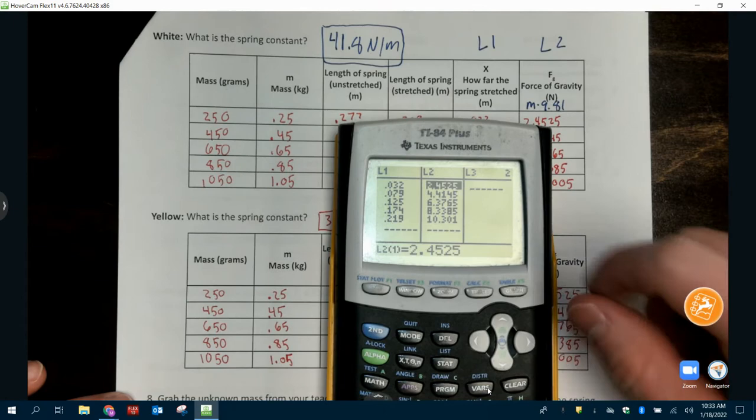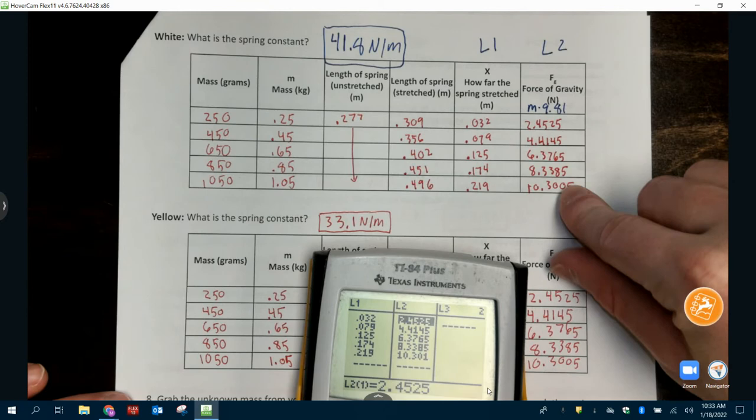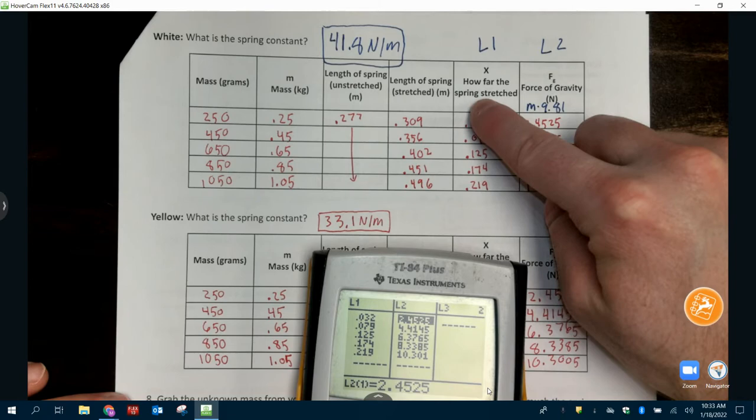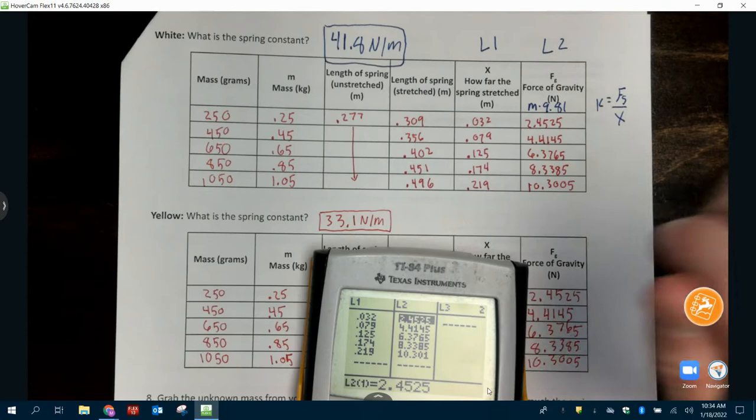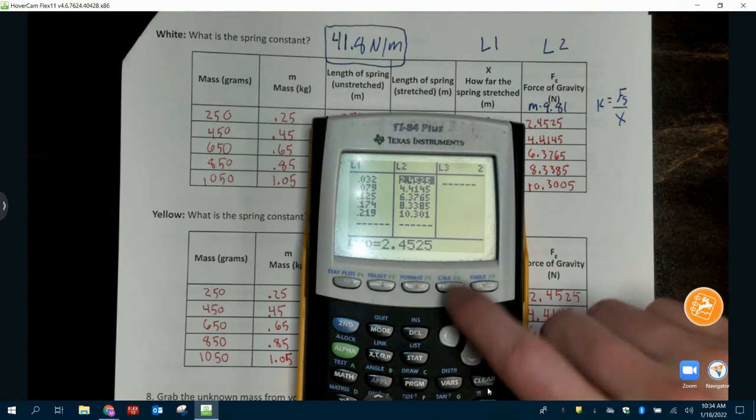And we go to stat. So you press stat and then edit. Under edit, you're going to plug these numbers in as your L1 and these numbers as your L2. We're going to plot L2 over L1 or this number over this number, which is going to let us get our K value. We solve for spring constant. K is FS over X. We cannot just divide those numbers. We have to plot it. So that's what we're doing here.